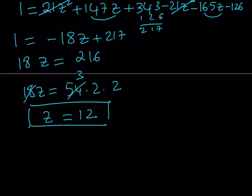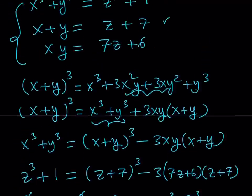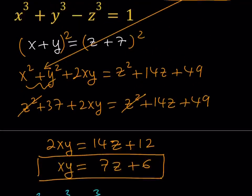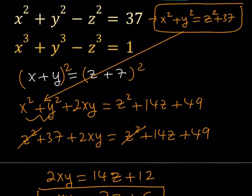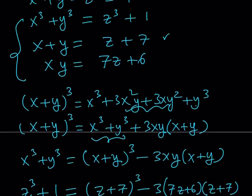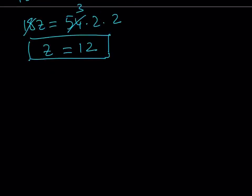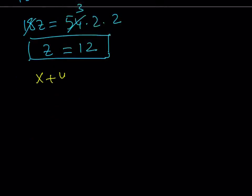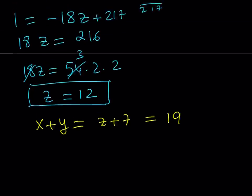Awesome. Since everything depends on z, we could just go ahead and find the x and y values from here. So, z is equal to 12. Let's go back to our original problem. If z is equal to 12, we could pretty much get everything from here. The best thing we can do is probably using the equations x plus y and xy. So, we had that x plus y is z plus 7. This means that x plus y can be written as 19.